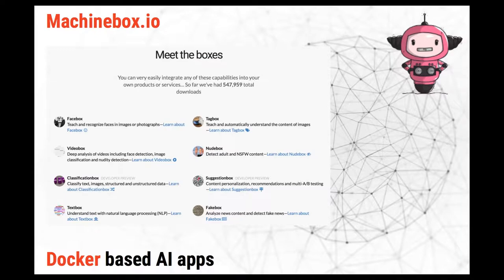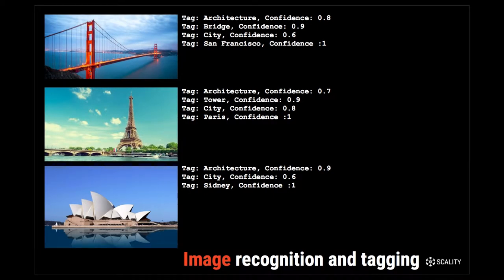We're going to use the one called TagBox, where the application recognizes different things in an image — whether it's a plant, food, and things like that — and you can also manually tag those images. For example, the app can quickly tell you it's architecture, maybe a bridge, tower, or opera, and that it's a city, but it won't tell you if it's San Francisco, Paris, or Sydney. Using TagBox and manual tagging, you can teach it to recognize the Golden Gate Bridge, the Eiffel Tower, and the Sydney Opera House.